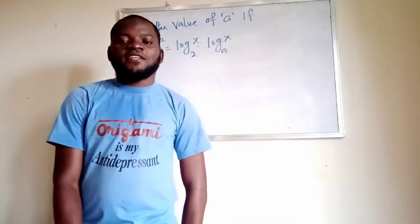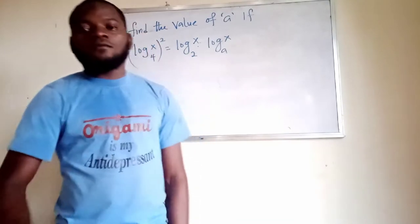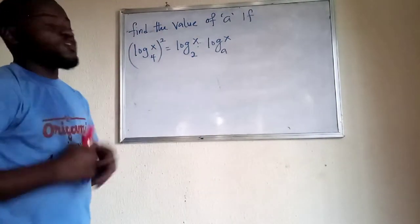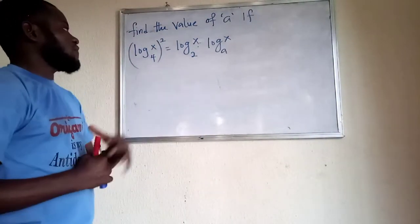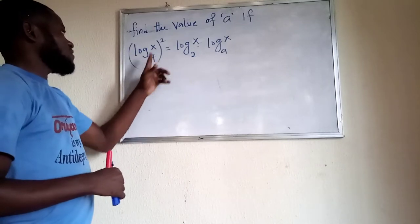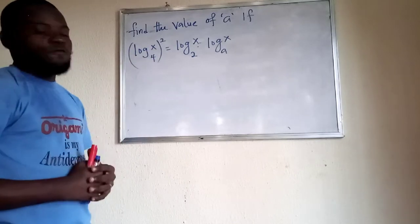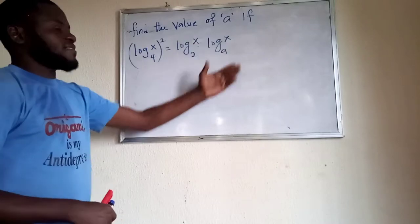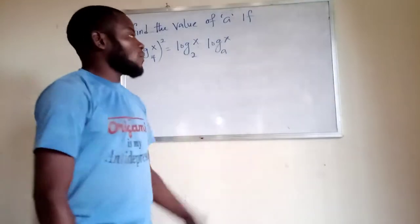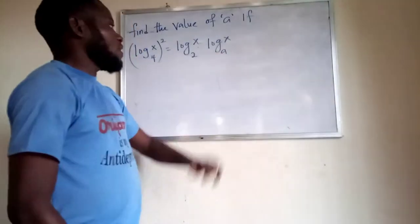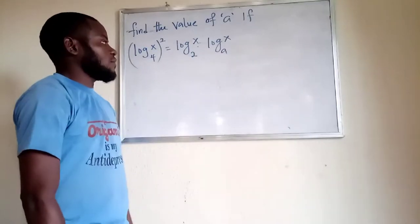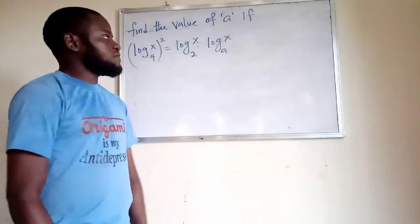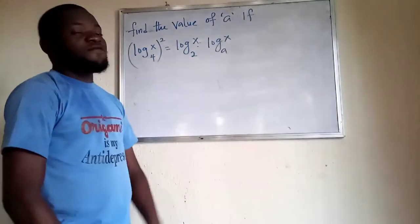Welcome to my channel. What we're going to look at now is finding the value of a, given that log of x in base 4 raised to the power of 2 equals log x in base 2 times log x in base a. We are looking for the value of a. You can pause the video and give the problem a try.